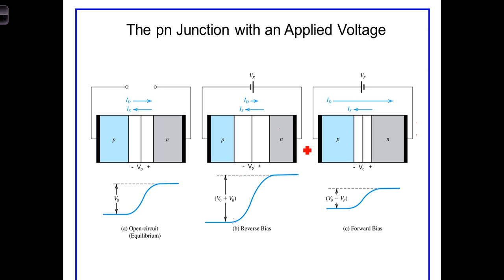So we understand that in the reverse bias situation, the current is very small and is the saturation current or drift current. In forward bias, the current becomes significant and is a result of diffusion from the doped areas.